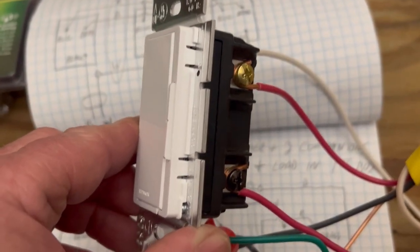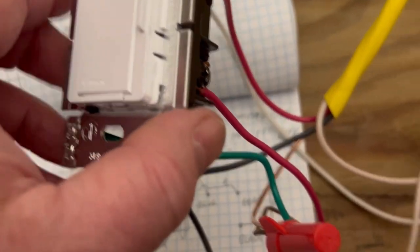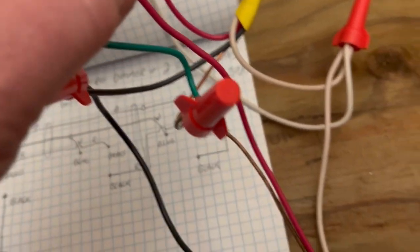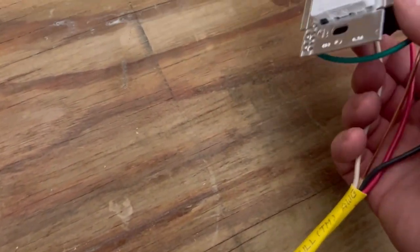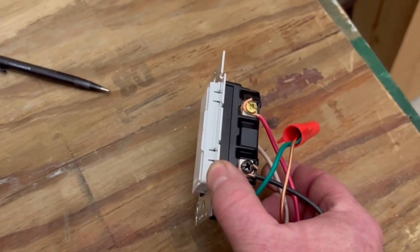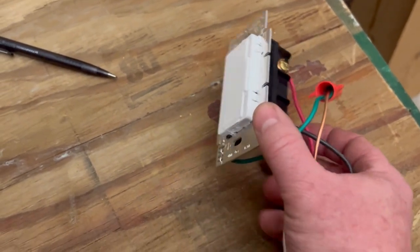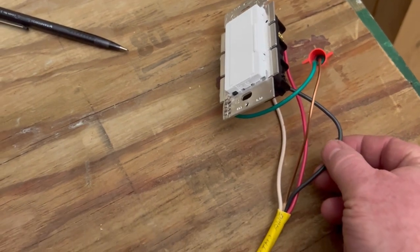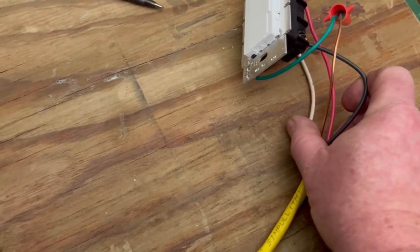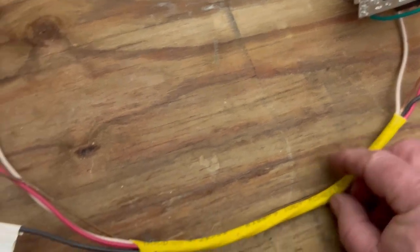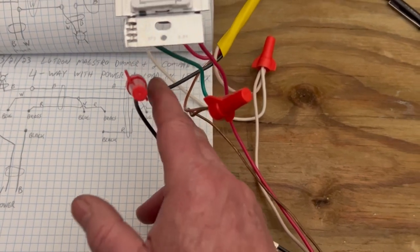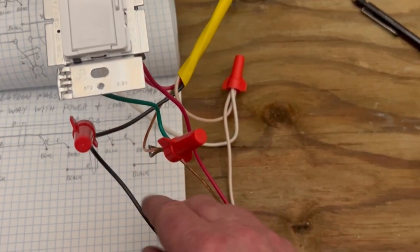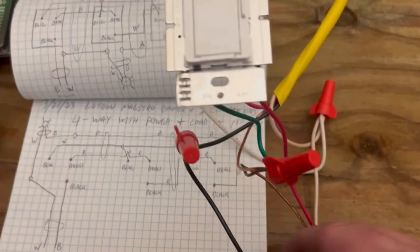Then I'm using the red conductor to go to my second switch, goes to the brass screw on the top there. And then the bottom one, that black screw, using the red wire again, comes out and it goes to the brass screw on that last switch.